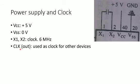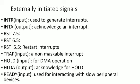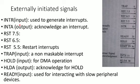You can see the clock out pin. The microprocessor is connected to an external device via the clock out pin. Externally initiated signals include interrupt and restart instructions, hold, ready, and external device communication. The INTR pin is used to generate an interrupt.